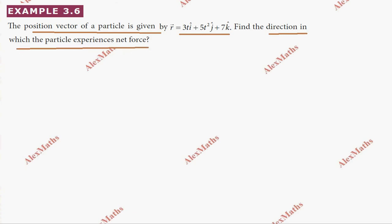So first we need to find velocity, and then acceleration. The velocity v vector is dr vector divided by dt.